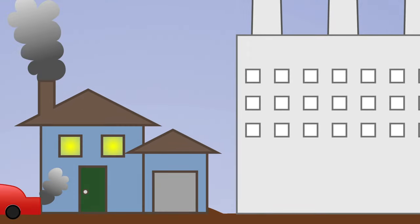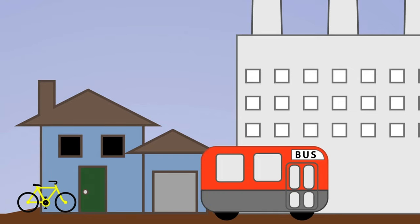As individuals, we can limit our emissions by turning off lights and appliances to save electricity, turning down our heating and cooling systems, and finding alternate methods of transportation and energy.